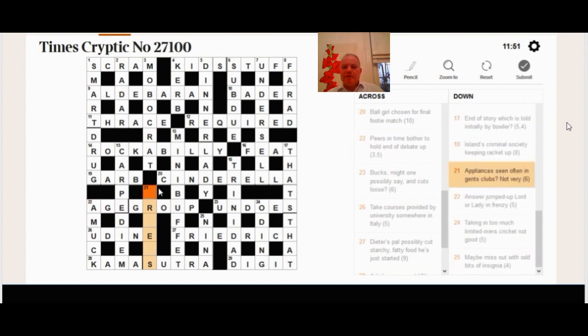And finally, 21 down. The appliances seen often in gents at dryers, with clubs being drivers without the very or the... What a puzzle.